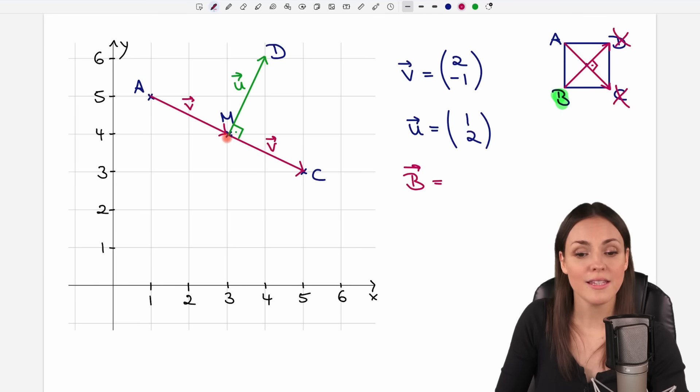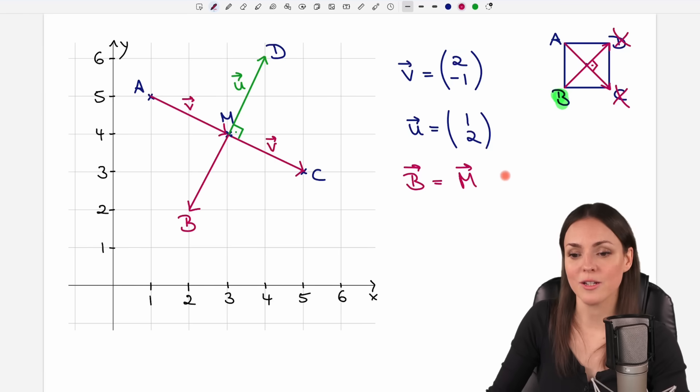So how can we find the coordinates of our point B then? We can start at the center, at M, but if we add u, we would end up in D. But we want to go into the opposite direction to end up in B. So instead of adding u, we just subtract u. Because this gives us the exact opposite direction. The same length, but the opposite direction. And that's what we want here. So we don't add u, but we subtract u.